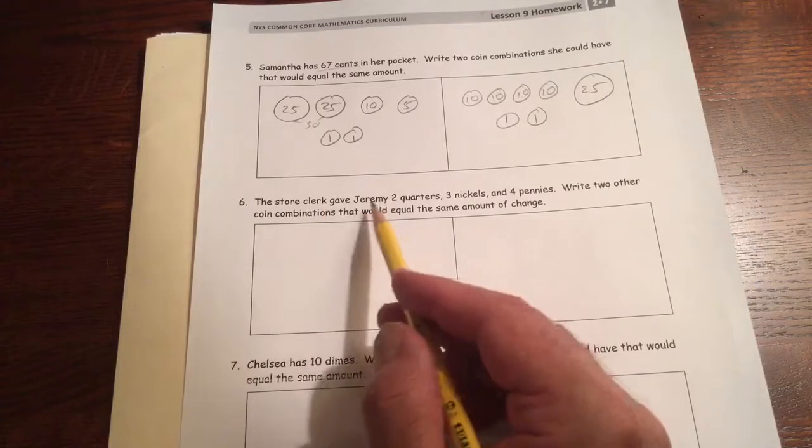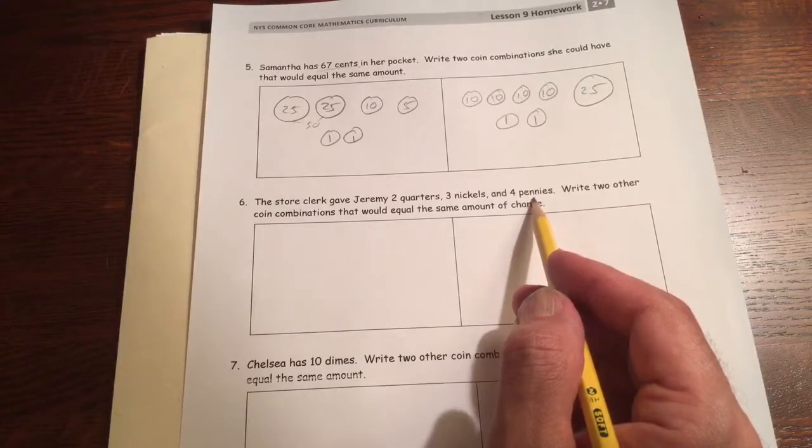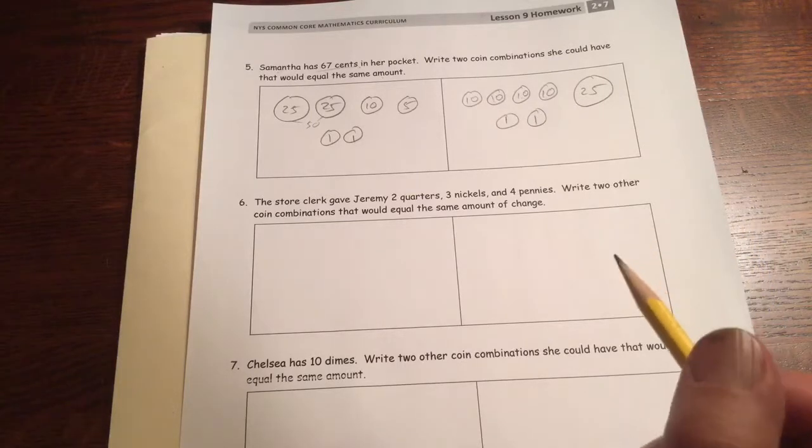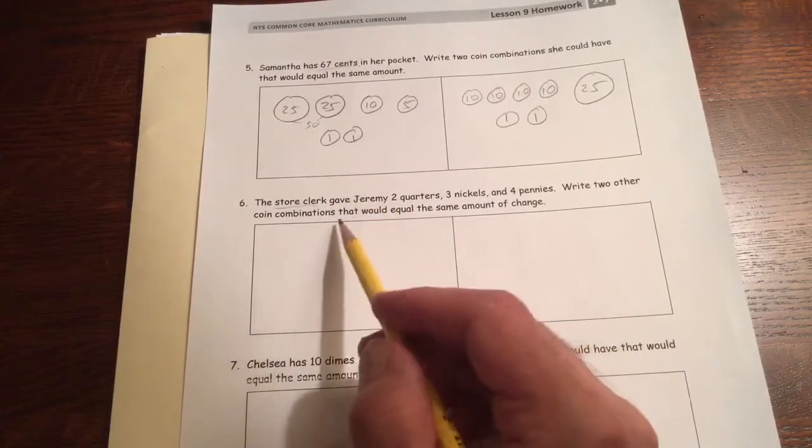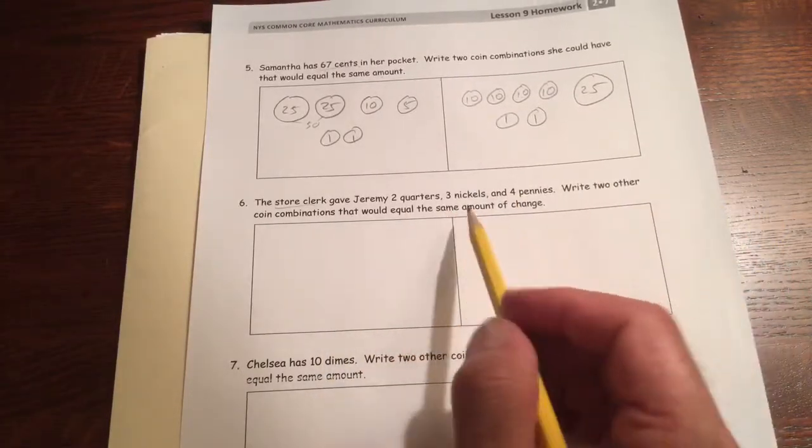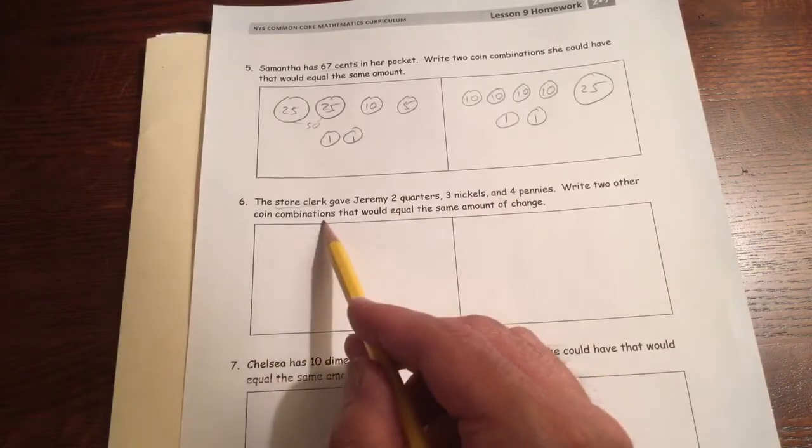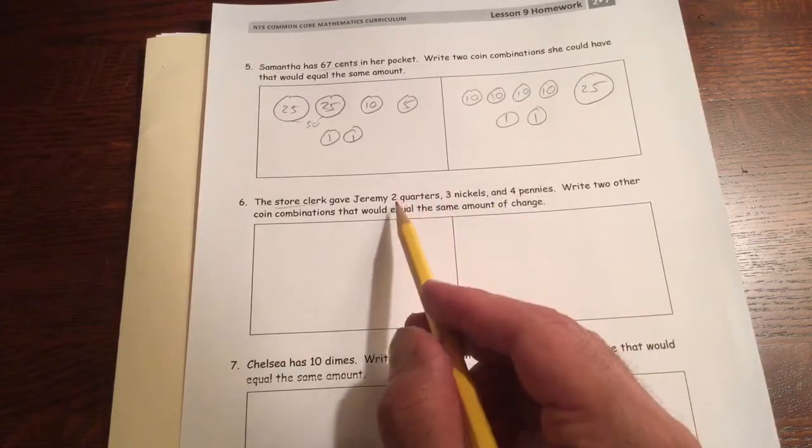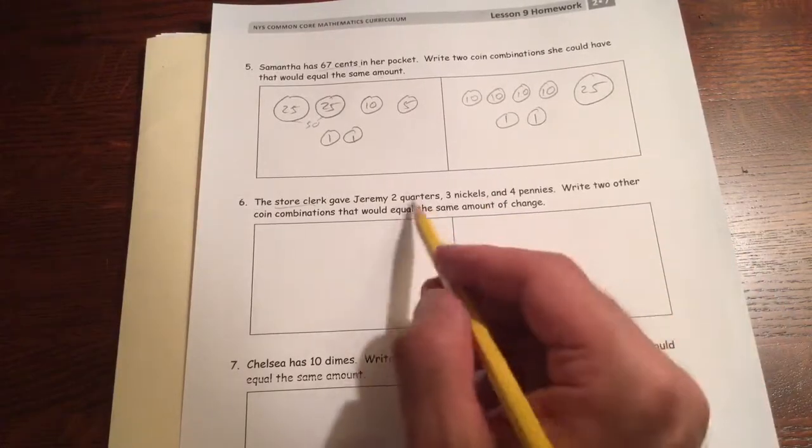Number six, the store clerk gave Jeremy two quarters, three nickels, and four pennies. Write two other coin combinations that would equal the same amount of change. So store clerk is somebody who makes change for you at a cash register. So he probably bought something and this is the change he got back. He got two quarters, three nickels, and four pennies. We have to figure out how much that is and write two other coin combinations that would equal the same amount of change. So you don't really have to know how much this is. You could draw two other ways to get this without even knowing how much the total is. But let's just figure out what the total is.